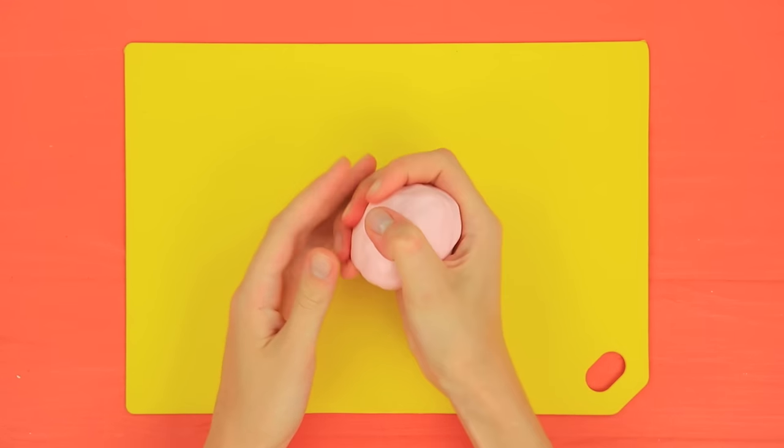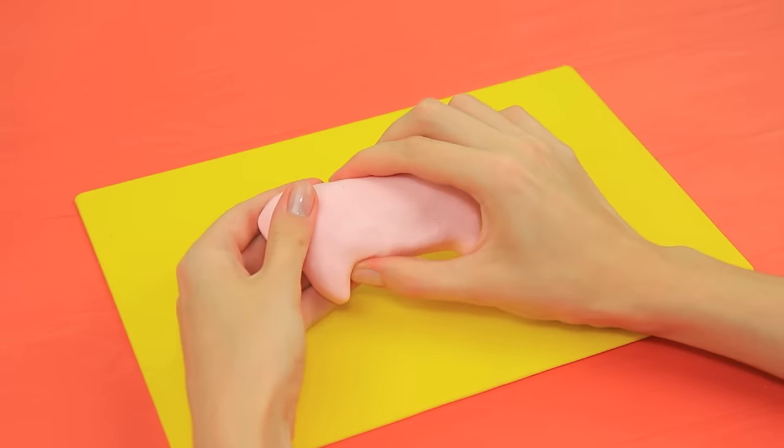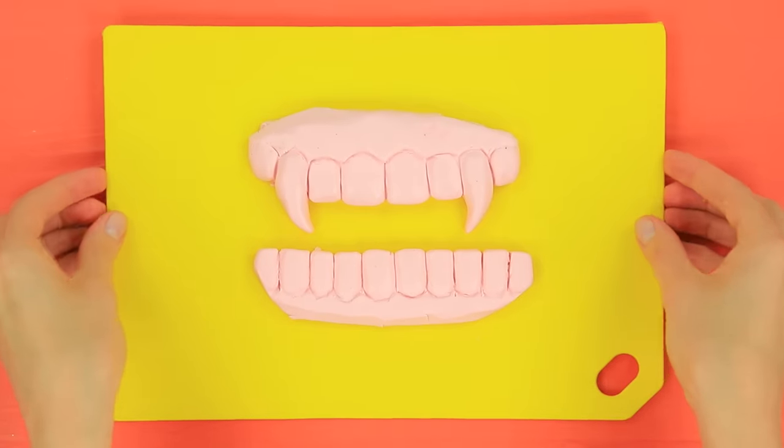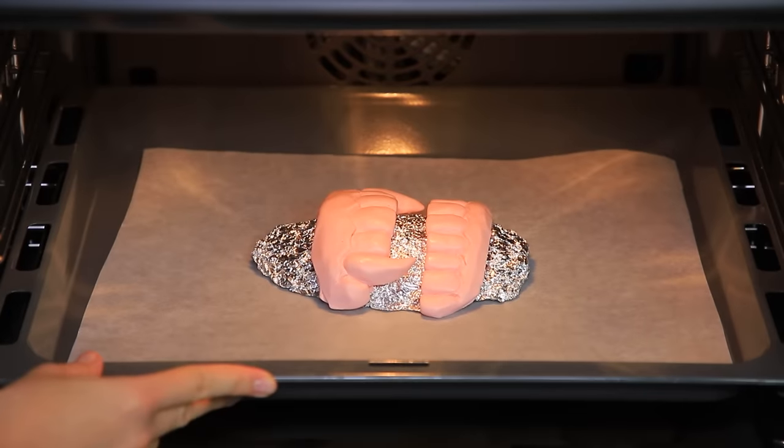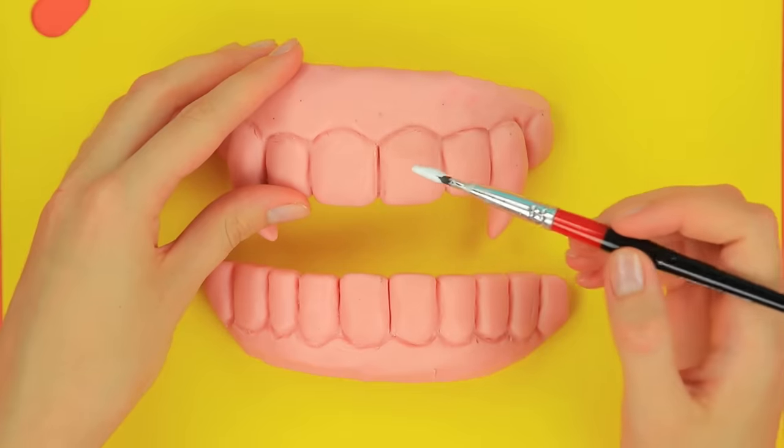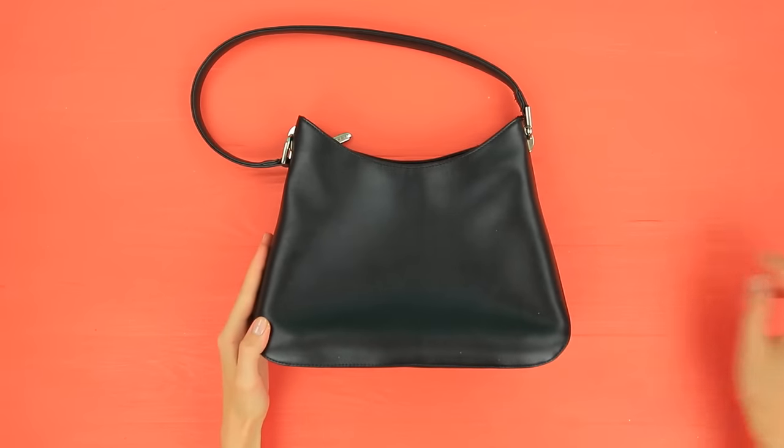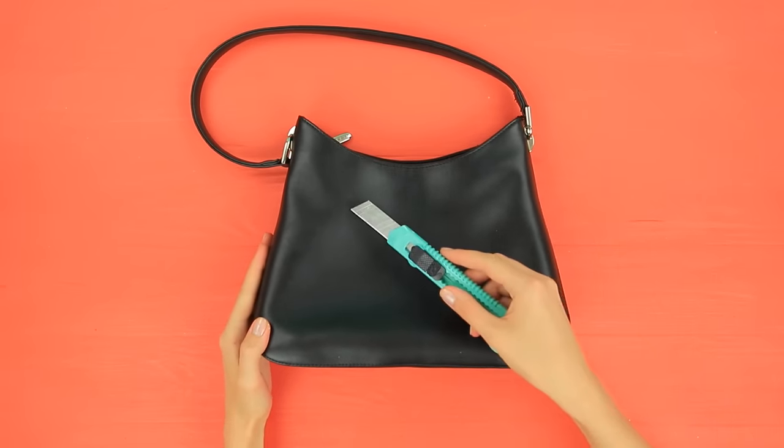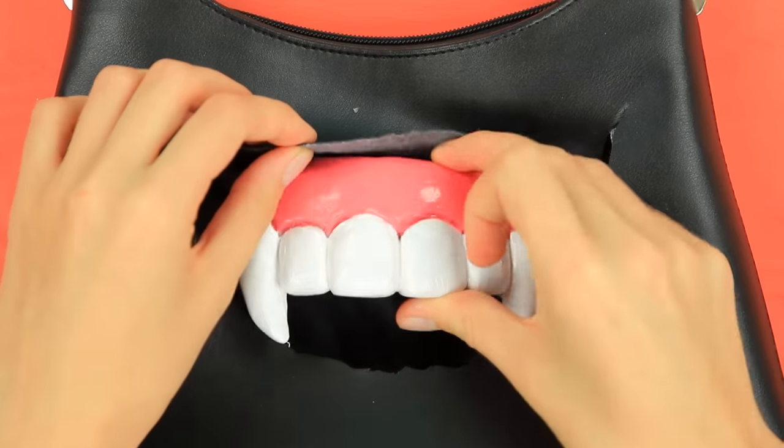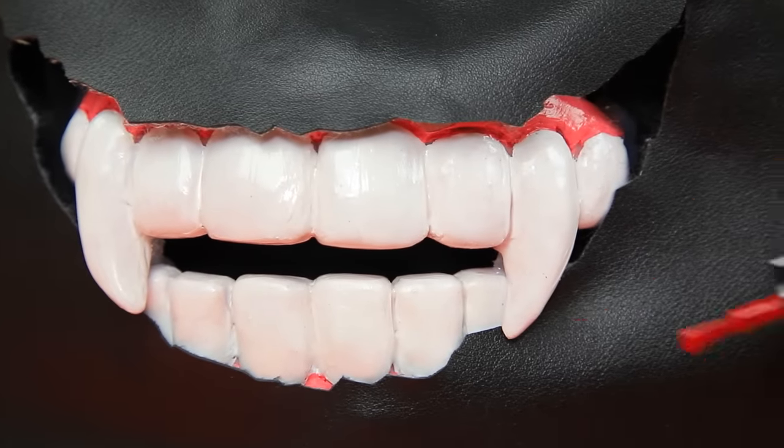Make vampire teeth out of polymer clay. Shape individual fangs. Bake according to the clay package instructions. Color the ready pieces with acrylic paint. Cut a smile-shaped hole in the bag. Glue in the teeth. Add blood drips with red nail polish.